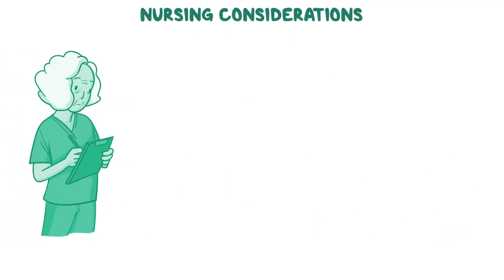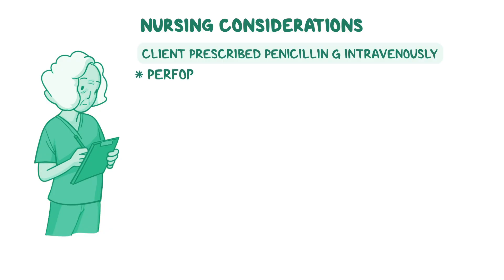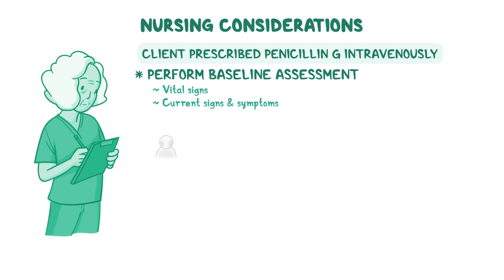When caring for a client who has been prescribed penicillin G intravenously for treatment of neurosyphilis, first perform a baseline assessment including vital signs and their current signs and symptoms, such as rash, abnormal gait, numbness in the extremities, confusion, and sensorineural hearing loss.